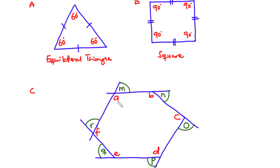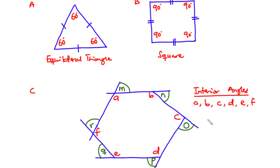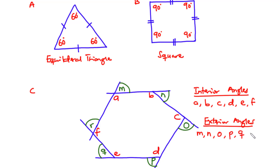This regular polygon has interior angles A, B, C, D, E, and F. The exterior angles — which are the angles on the outside of the polygon — are M, N, O, P, K, and R. Notice that each interior angle plus the corresponding exterior angle sums to 180 degrees. So A plus M equals 180 degrees, B plus N equals 180 degrees, C plus O equals 180, D plus P equals 180, and so on.